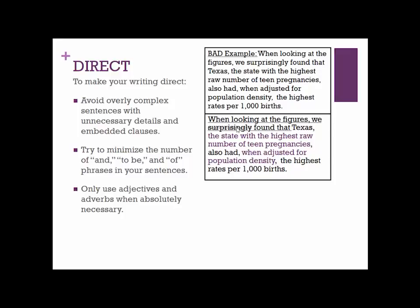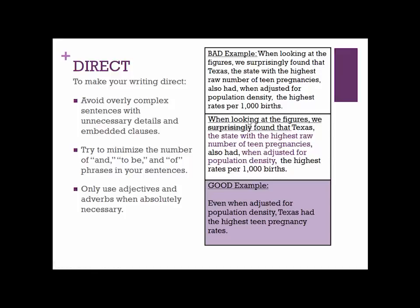For example, a sentence like: 'When looking at the figures, we surprisingly found that Texas, the state with the highest raw number of teen pregnancies, also have when adjusted for population density, the highest rates per 1,000 births' — we can eliminate a lot. We have embedded clauses, extra information, adverbs, and phrases that are simply not necessary. We don't need to say 'when looking at the figures' — it's implied. A much more direct version would be: 'Even when adjusted for population density, Texas had the highest teen pregnancy rates.'